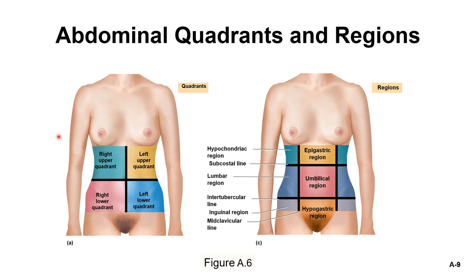The abdominal region can be divided into four quadrants: right upper, left upper, right lower, and left lower. It can also be divided into nine regions in a tic-tac-toe grid pattern. These include the right and left hypochondriac regions, the right and left lumbar regions, the right and left inguinal regions, and in the middle: the epigastric, umbilical, and hypogastric regions.